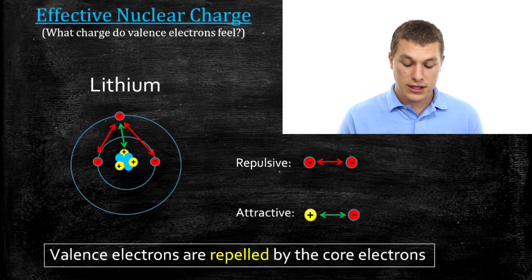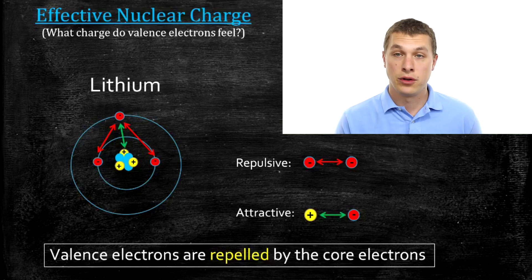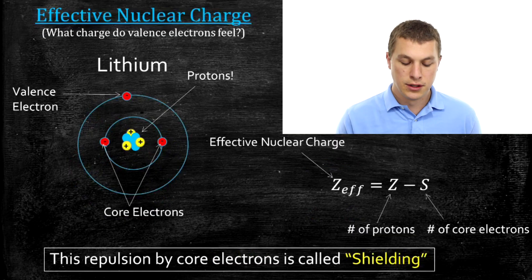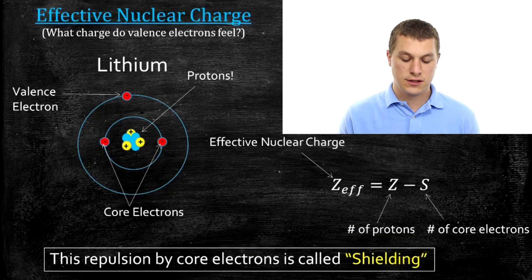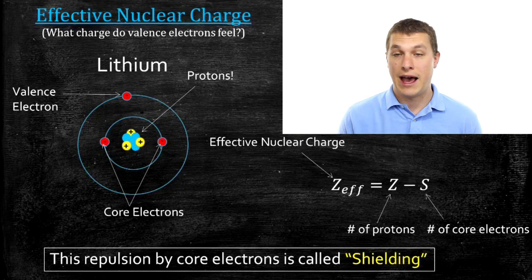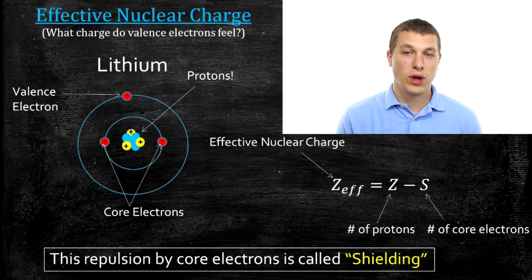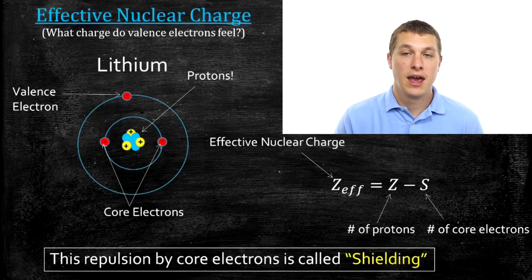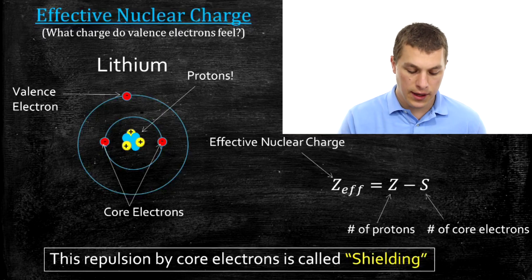Effective nuclear charge is all about thinking how much of the nucleus really affects that outermost valence electron. Valence electrons are repelled by the core electrons, and we call that repulsion shielding — because those inner electrons are shielding the outermost electron from feeling the nucleus's charge. So if we want to calculate what the effective nuclear charge is, we need to take into account how much things are pulling that electron in and how many things are pushing that electron away.